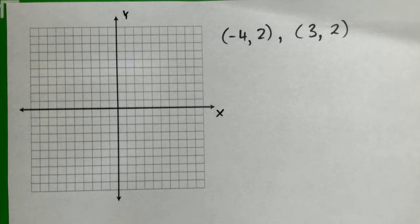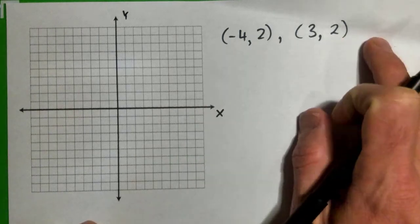All righty, so we have these two points: (-4, 2) and (3, 2). We've got to find the equation of a line that passes through the two points and write your answer in slope-intercept form if possible. So just find the equation of a line that goes through those two points.